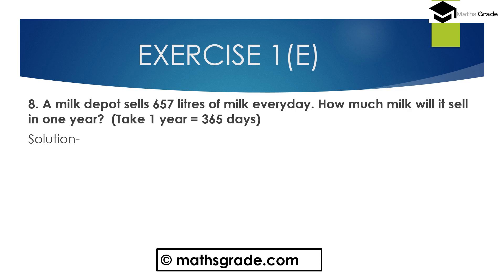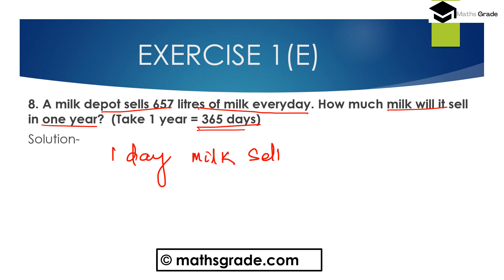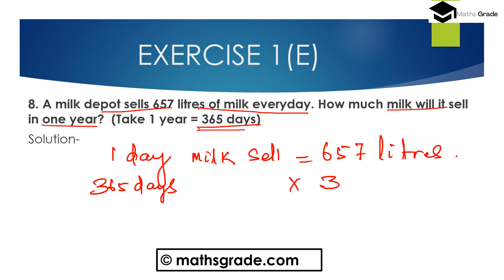Question number 8: A milk depot sells 657 litres of milk every day. In each day the milk seller sells 657 litres of milk. How much milk will it sell in 1 year? One year has 365 days, so we need to multiply 365 by 657 litres.